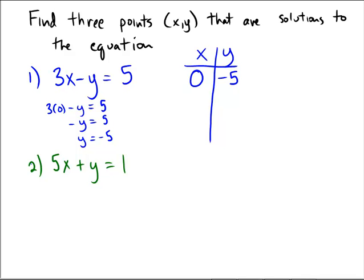Now I did say three points, so what's the next best point to pick? Funny enough, it's actually zero again in my opinion, because we can replace for either variable.